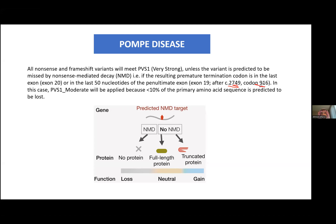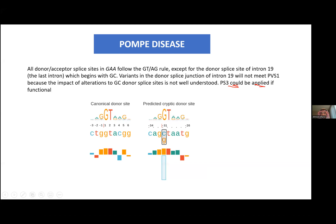So as a general speaking: if we have a stop codon, PVS1 applies as a pathogenic variant. But when that stop codon is in exon 20 or at this exact nucleotide position, the stop variant may not apply as very strong because of nonsense-mediated decay allowing the premature termination to be skipped. This is just one example of how a single disease can be complex.